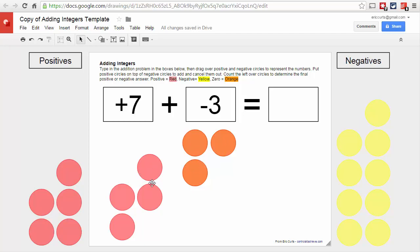And so I'm left with one, two, three, four positives left over. So that would be the answer to my problem. I'm left with a positive four for my final answer.